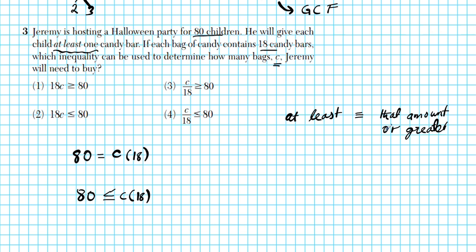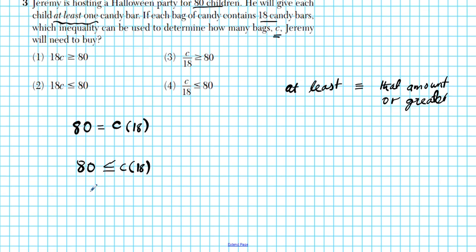Anytime you see 'at least,' it could be that amount or greater. Using the reflexive property of inequality, we can rewrite 80 ≤ 18c as 18c ≥ 80 — the inequality points to the smallest number, like an alligator eating the bigger meal. So the number of bags times 18 has to be greater than or equal to 80 to guarantee each child has at least one candy bar. Our answer is clearly option number 1.